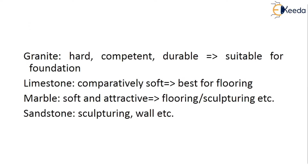For example, if we take granite, it is a hard material and very competent and durable, hence granite is used in foundations. Coming to limestone, it is very soft comparatively, and hence it is suitable for flooring. We have to know the properties before coming to a conclusion. Coming to marble, which is soft and attractive, hence it is used for flooring or sculpting processes. Coming to sandstone, it is mainly used in sculpting walls, etc.